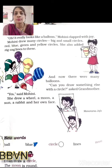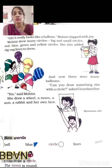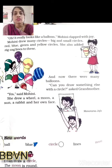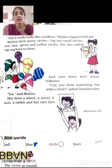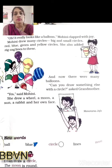Can you draw something else with the circle? Asked grandmother. Asked means poochna. So grandmother ne usse puchha — kya tum circle se kuch aur bhi bana sakti ho? Something else ka matlab hota hai kuch aur. Grandmother ne puchha, aur grandmother ka matlab hota hai hamaari daadi maa.